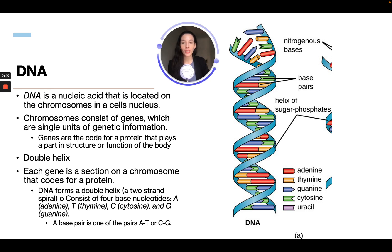DNA forms a double helix, which is a two-stranded spiral. It consists of four base nucleotides: A, adenine; T, thymine; C, cytosine; and G, guanine. A base pair is one of the pairs — adenine pairs with thymine, and cytosine pairs with guanine.